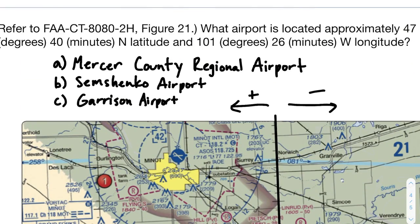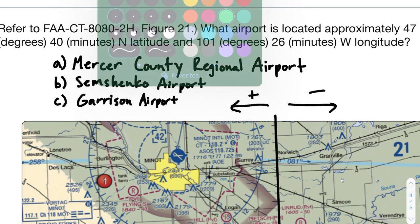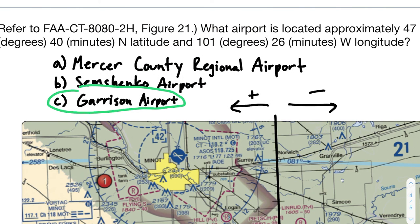Is Garrison Airport one of the answer choices? Yes, it is. Garrison Airport is located at those lines of latitude and longitude. That's how you solve lines of latitude and longitude problems. Hopefully that helped out a little bit. If you have any questions, feel free to leave them in the comments and I will respond to them. Have an amazing day.